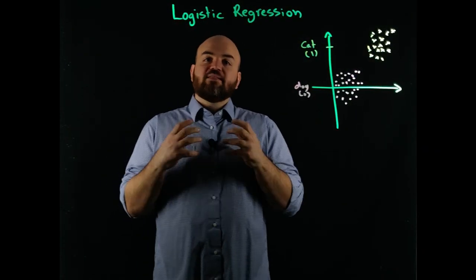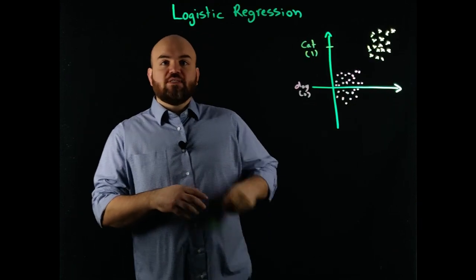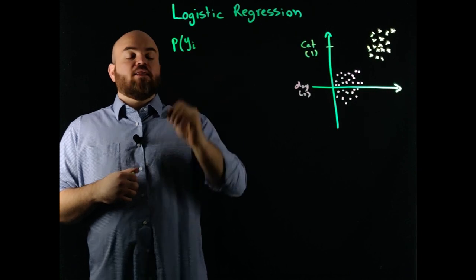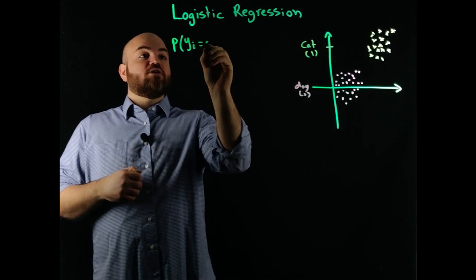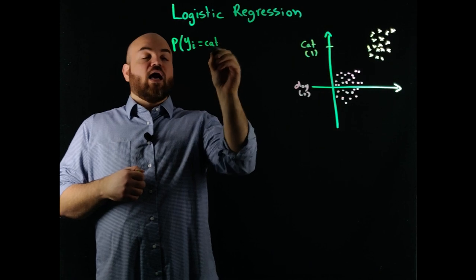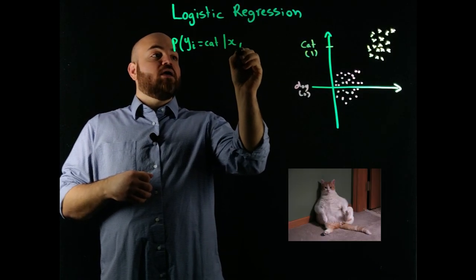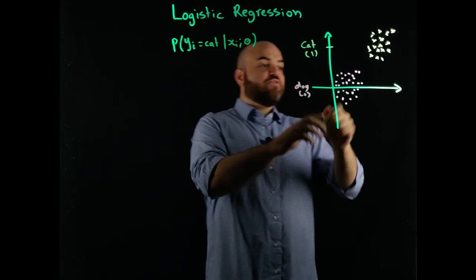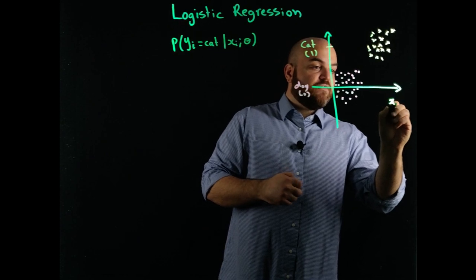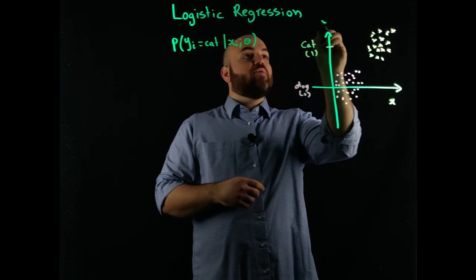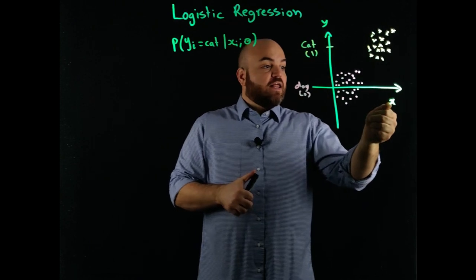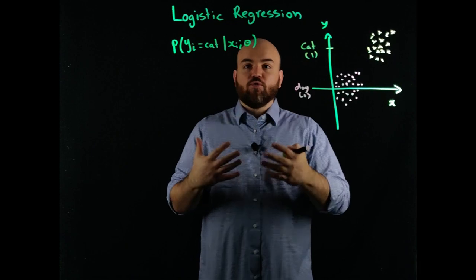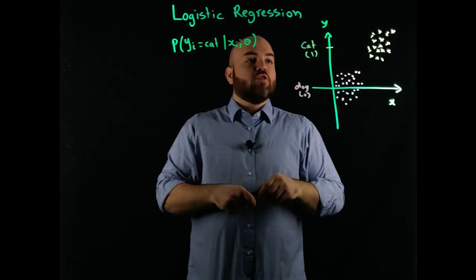Logistic regression is a statistical algorithm that allows us to predict the probability that a dependent variable is of a certain category, say cat, given an input and a certain model. So say I have a bunch of inputs — the independent variables x and dependent variable y — and let's say these are images. I'm displaying those in 2D as one data point in order to make the case for what logistic regression is.